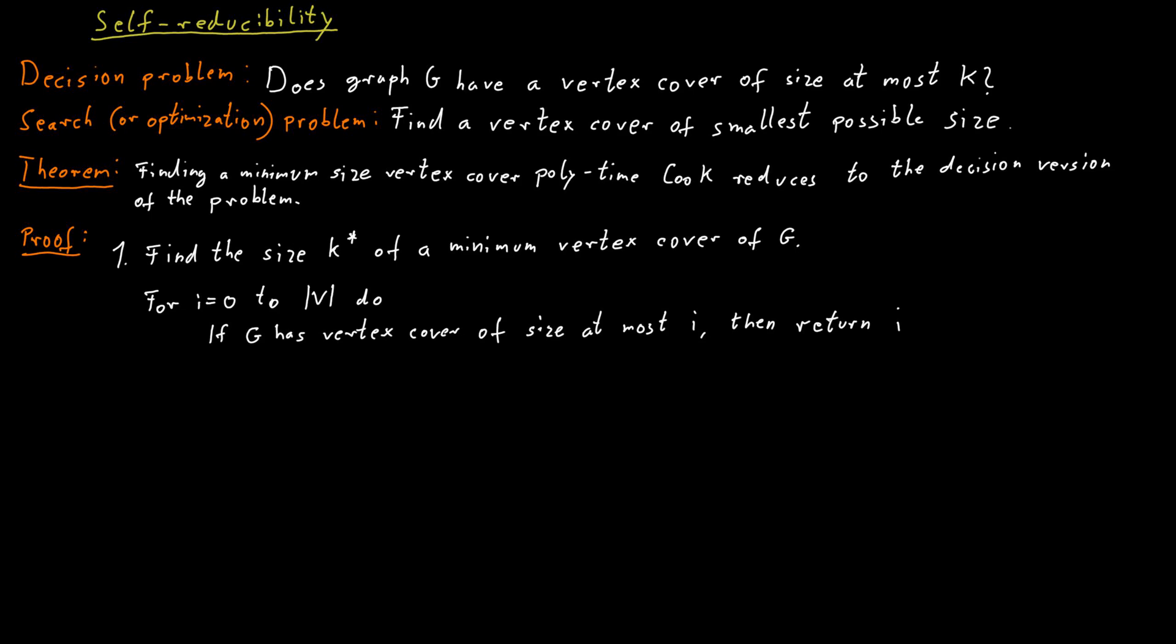If you're very clever, you might say, this is very inefficient. What we really should do is we should do binary search here. But both methods work in the sense that both methods will be polynomial. Because if I do this linear search, how many times will I ask the oracle at most? I start at 0 and then I know there's a vertex cover of size n when n is the number of vertices in the graph. So I will only call the oracle size of v many times.